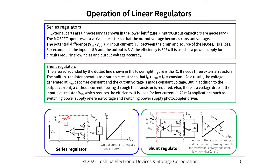For series regulators, input and output capacitors are necessary as shown in the lower left figure, but no other external parts are needed. The MOSFET operates as a variable resistor so that the output voltage becomes constant. The potential difference (Vin minus Vout) times the input current Iin between the drain and source of the MOSFET is a loss. For example, if the input is 5V and the output is 3V, the efficiency is 60%. It is used as a power supply for circuits requiring low noise and output voltage accuracy.